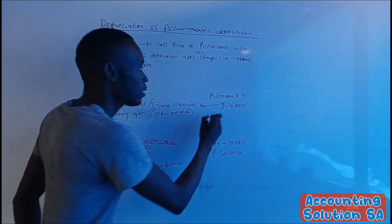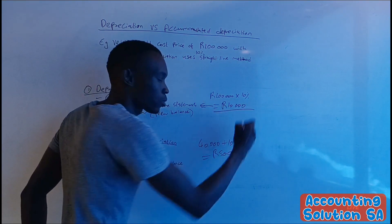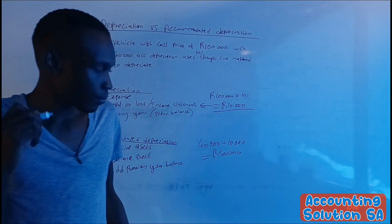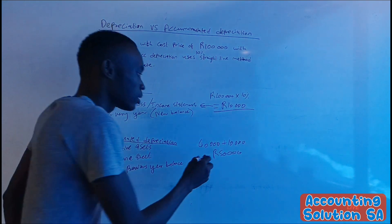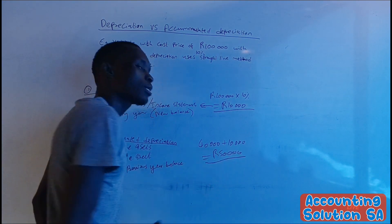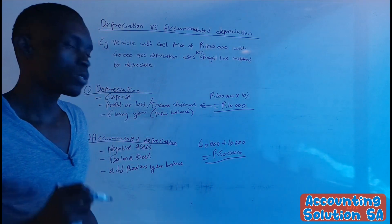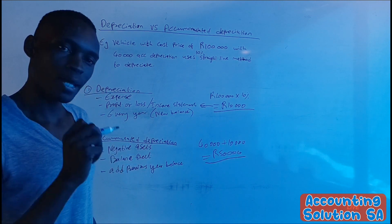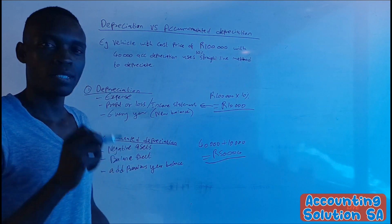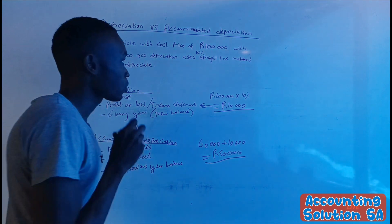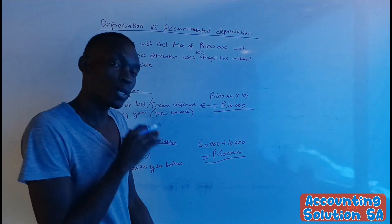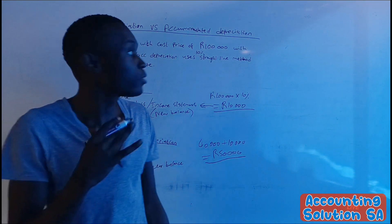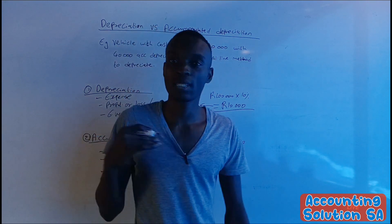Never record accumulated depreciation under the income statement. Only the depreciation amount of 10,000 goes to the income statement. The accumulated depreciation of 50,000 is the balance that will be subtracted from assets under the balance sheet.